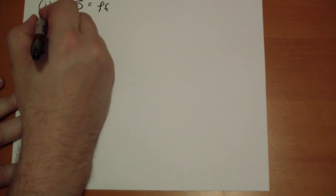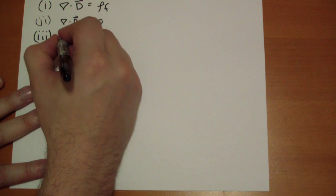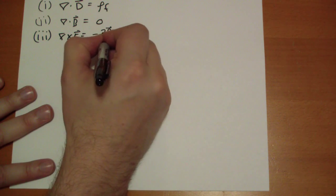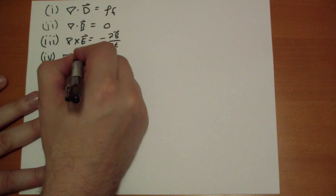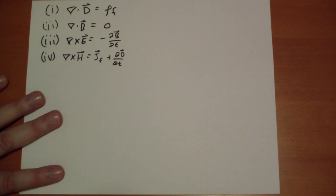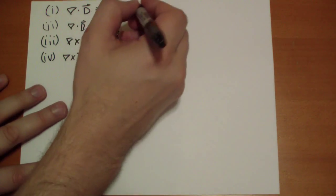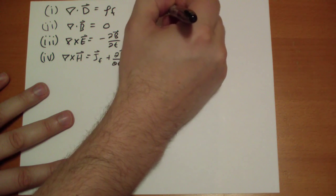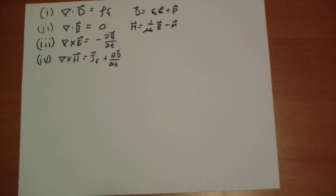First, we have Gauss's law — it's just the free charge. Then the divergence of the magnetic field is always zero. Then the curl of the E-vector is minus the change in the magnetic field. And finally, we have the new Ampere's law: curl of H equals the free current plus the change in the D-vector. The D-vector and H-vector are defined in terms of polarization and magnetization of the material, and changing magnetization of the field doesn't change anything else except through the magnetic field.